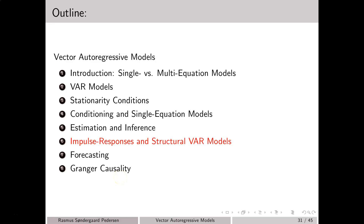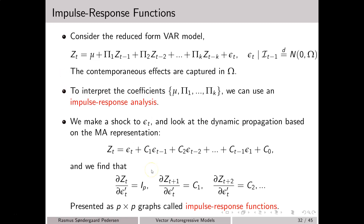In this video we consider impulse responses and structural VAR models. Consider again the vector autoregressive model of order k. Recall that the contemporaneous effects in the model are captured in the omega matrix, namely the covariance matrix of the error vector. On the other hand, the other model parameters — those in the constant vector mu and the autoregressive matrices pi_1 up to pi_k — are quite tricky to interpret directly.